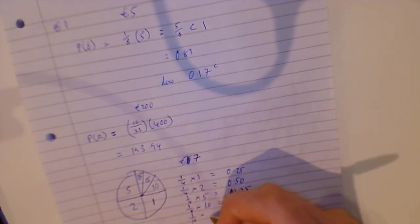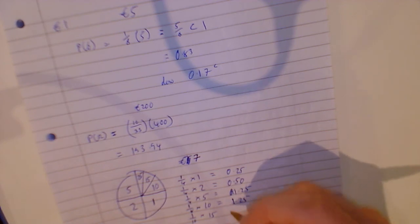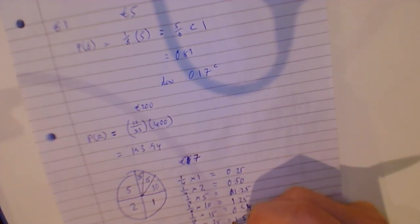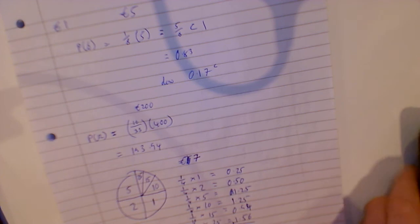This next one is a sixteenth by fifteen. So we go along, fifteen divided by sixteen equals 0.937, so 0.94. And the last one would be one sixteenth multiplied by twenty-five. So twenty-five divided by sixteen, and that's 1.56. Add them all up.